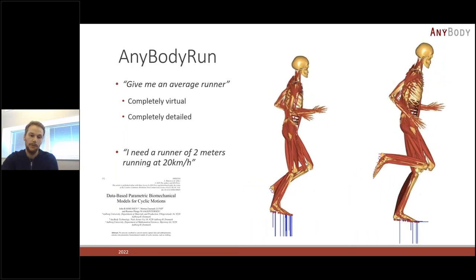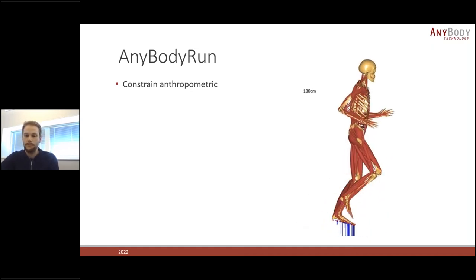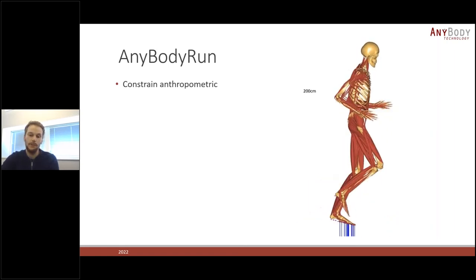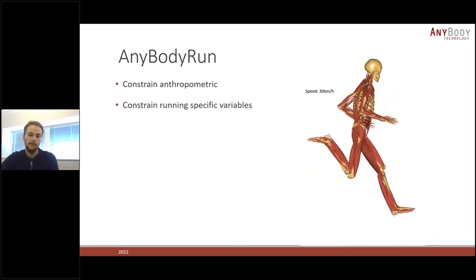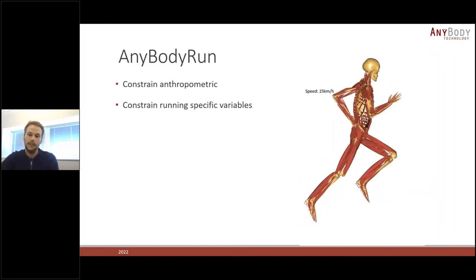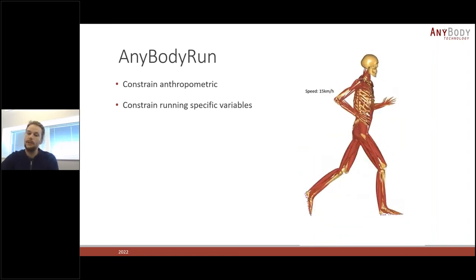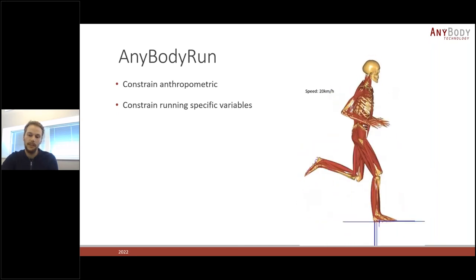We can constrain different anthropometric dimensions — stature, body segment lengths, body mass, gender-specific parameters — and also running-specific parameters such as speed, foot strike pattern (heel or toe landing), step width, step length, and cadence. So we have a lot of opportunities to generate exactly what we need. We can also take a complete motion capture recording and use it as constraints — if someone ran at 10 km/h and you want to see how they look at 12 km/h, we use their recording as constraints to get the most likely running style with that speed tweak.